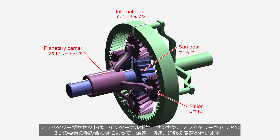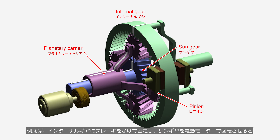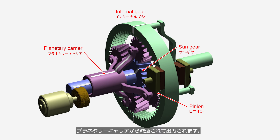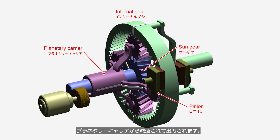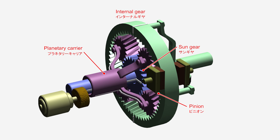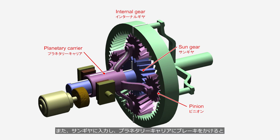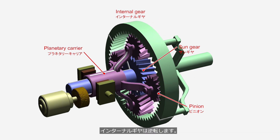The planetary gear performs speed reduction, speed increase, and reversing by combining three elements: the internal gear, the sun gear, and the planetary carrier. For example, by applying a brake to the internal gear to prevent it from rotating and using an electric motor to drive the sun gear, the input rotation speed to the sun gear is reduced and then output through the planetary carrier. When input is applied to the sun gear and a brake is applied to the planetary carrier, the internal gear rotates in reverse.